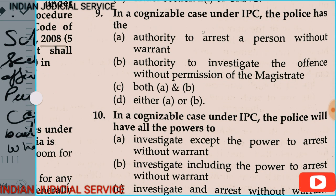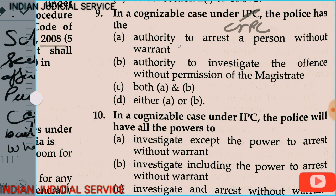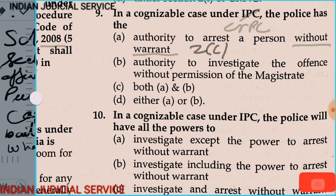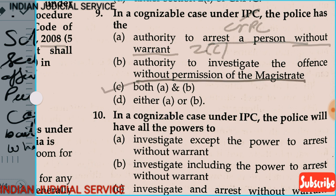Question 9: In a cognizable case under CrPC, the police have the authority to arrest without warrant — this is a very important point. Cognizable offenses are those where the police officer can arrest any person without warrant, if specially mentioned in Schedule 1. Additionally, the police have the authority to investigate the offense without the permission of a magistrate. So both options are correct — the answer is C, both A and B: arrest without warrant and authority to investigate without magistrate's permission.